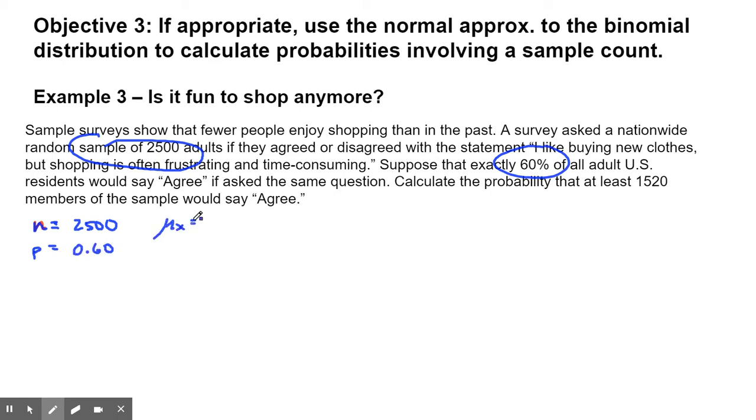So let's find our mean. Our mu sub x is going to be n times p. I'm not going to leave this screen to do that. So 2,500 times 0.6, that's 1,500. And that would be U.S. adults who would agree.